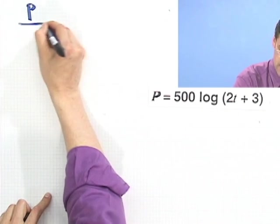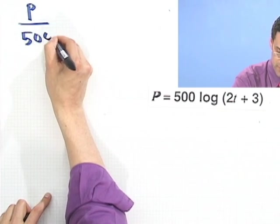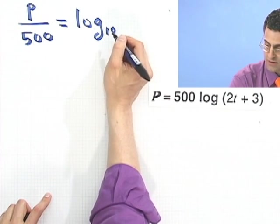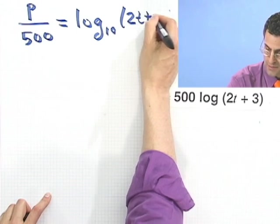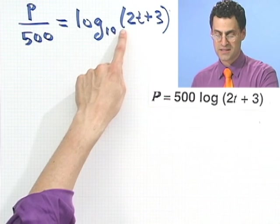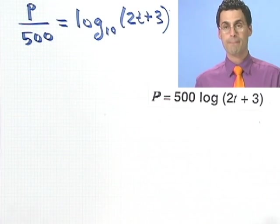So I'm going to divide everything through by 500, and so I see population P divided by 500 equals log, and remember, a naked log is log base 10, so I'll actually write that in there just to avoid any obscenity on the web. No nudity here. I see log base 10 of 2t plus 3.